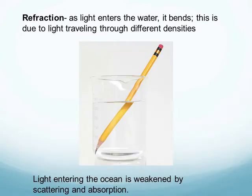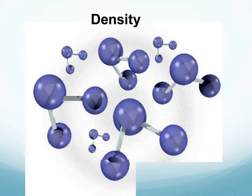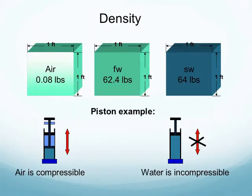Another interesting thing that happens when light passes through water is that it appears to bend. When you look at a pencil in a flask of water, it looks broken. What actually happens is light is refracted — it bends when it goes from one density to another. Because the density of air is much lower than the density of water, the light slows down as it enters the water, which is why the pencil appears to have shifted.